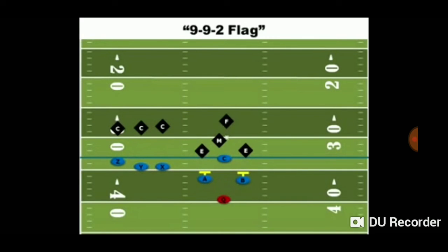Here's an example of 9-92 flag. On our route tree, 9 is a fly or go pattern, and 2 is a slant. Notice you don't have to call the slant right or left, since an even-numbered route always goes inside towards the middle of the field. The flag is called verbally to denote the center's route.